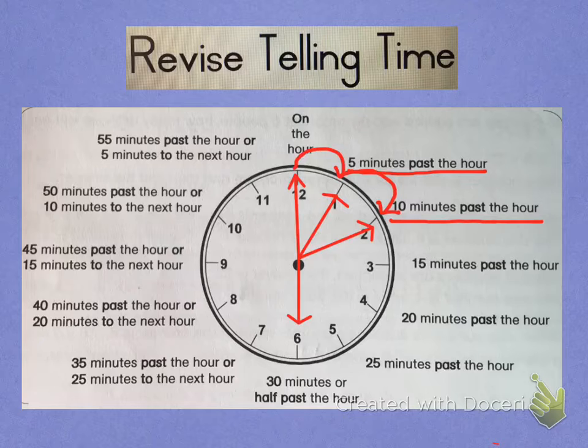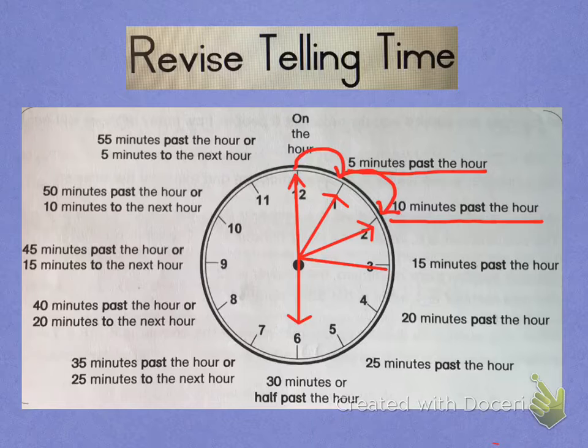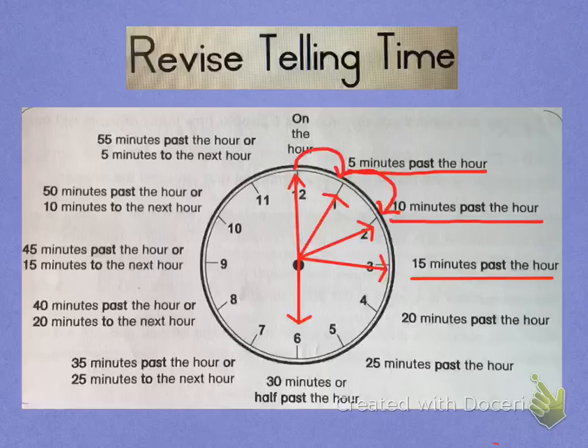Each time it passes by one of these numbers, remember, five more minutes is added on. So now let us go to this one here. It's pointing now to the three, just after the three. And that means it is 15 past six, which means quarter past six.